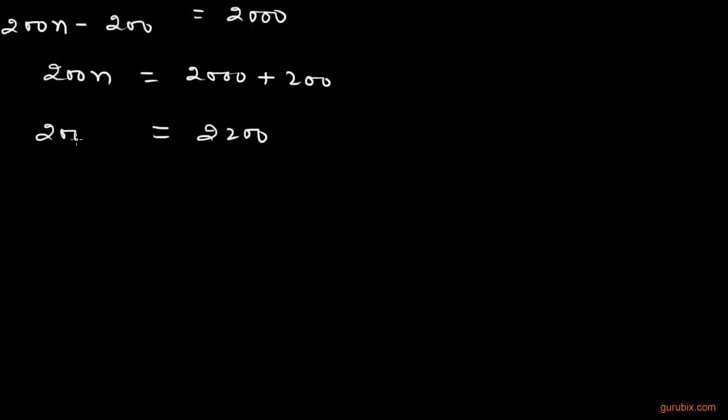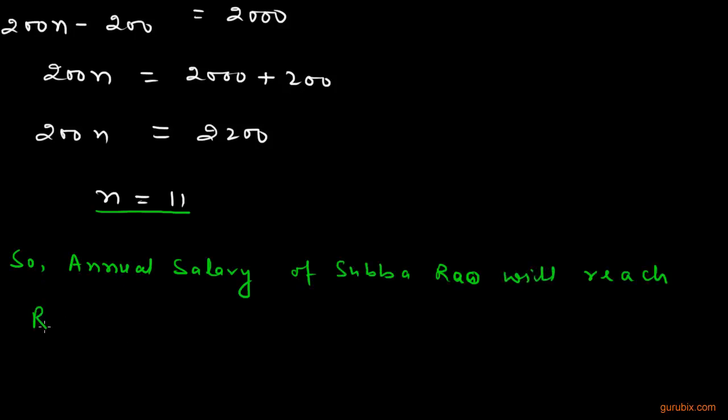Therefore we get n equals 11. This is the value of n. So we can see that the annual salary of Subba Rao will reach Rs. 7000 in the 11th year. This means, for example 2005, in the 11th year of his service. This is the solution of the question. Thank you.